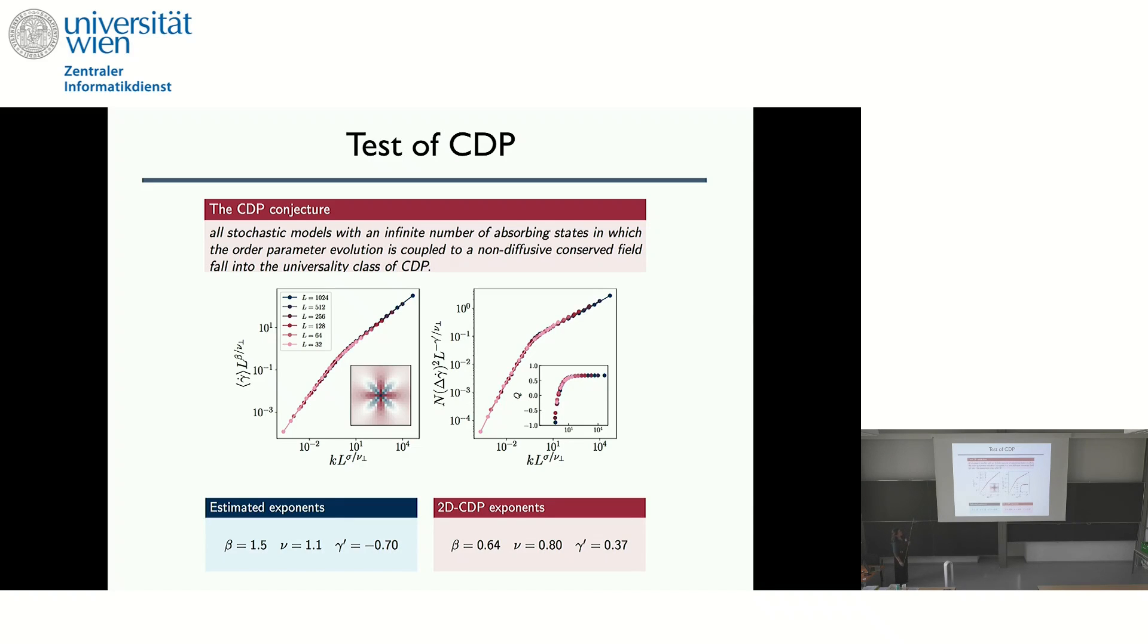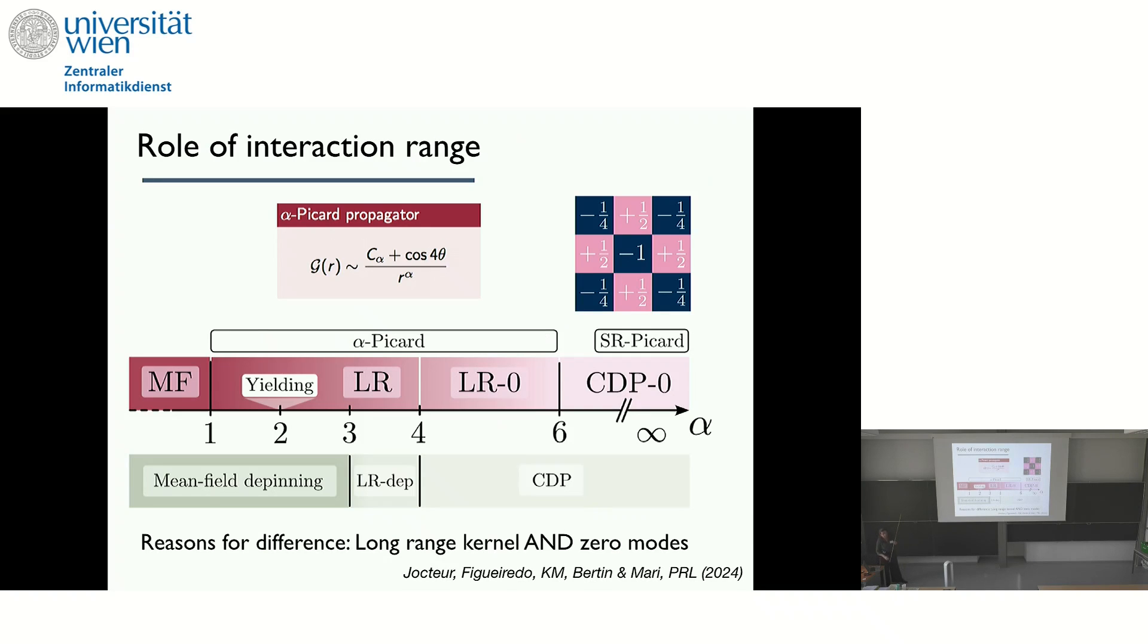But we see clearly these exponents are very different from the CDP exponents. And so what we could wonder, maybe this is because we are long range instead of short range, but I will argue that this is not sufficient. And one very interesting feature is also that this gamma prime has a negative value. That means that the fluctuations are going to vanish at the critical point, which is a bit unusual.